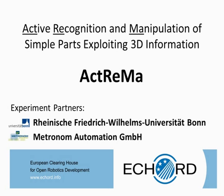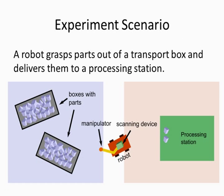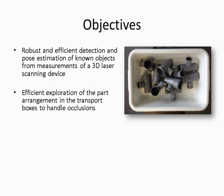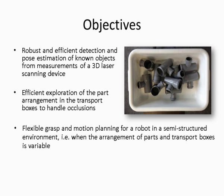This video shows the results of the Eckward experiment, ACT-REMA. We consider a scenario where a robot grasps parts out of a box and delivers them to a processing station. The major challenges in this setup are robust and efficient object recognition, efficient exploration of the part arrangements in the transport boxes, and flexible grasp and motion planning for a robot in a semi-structured environment.